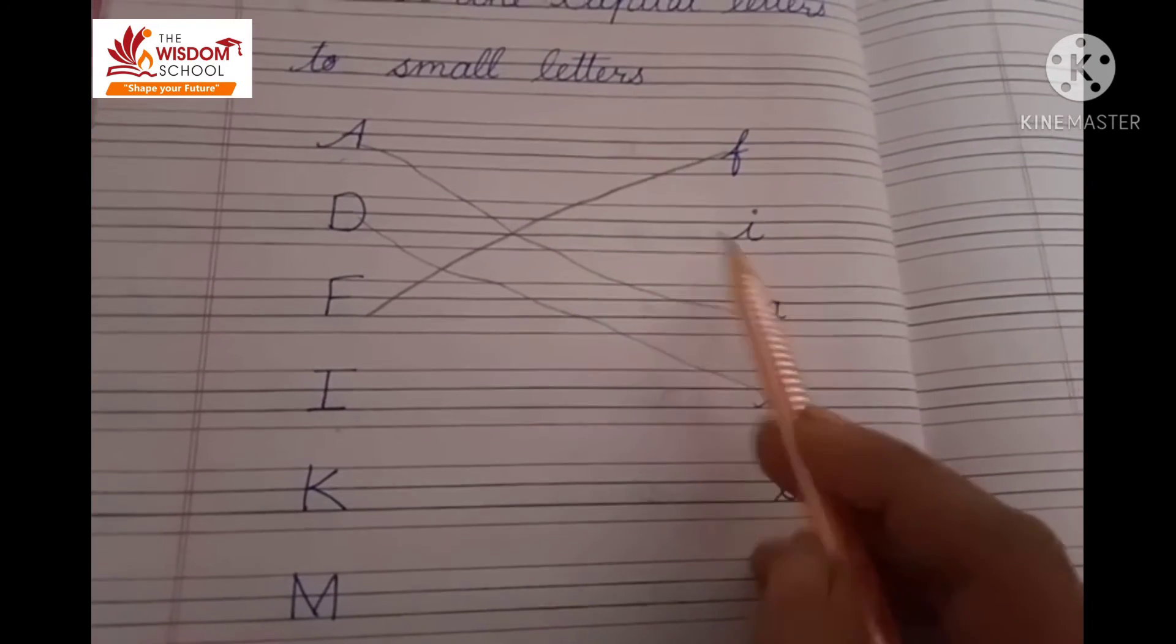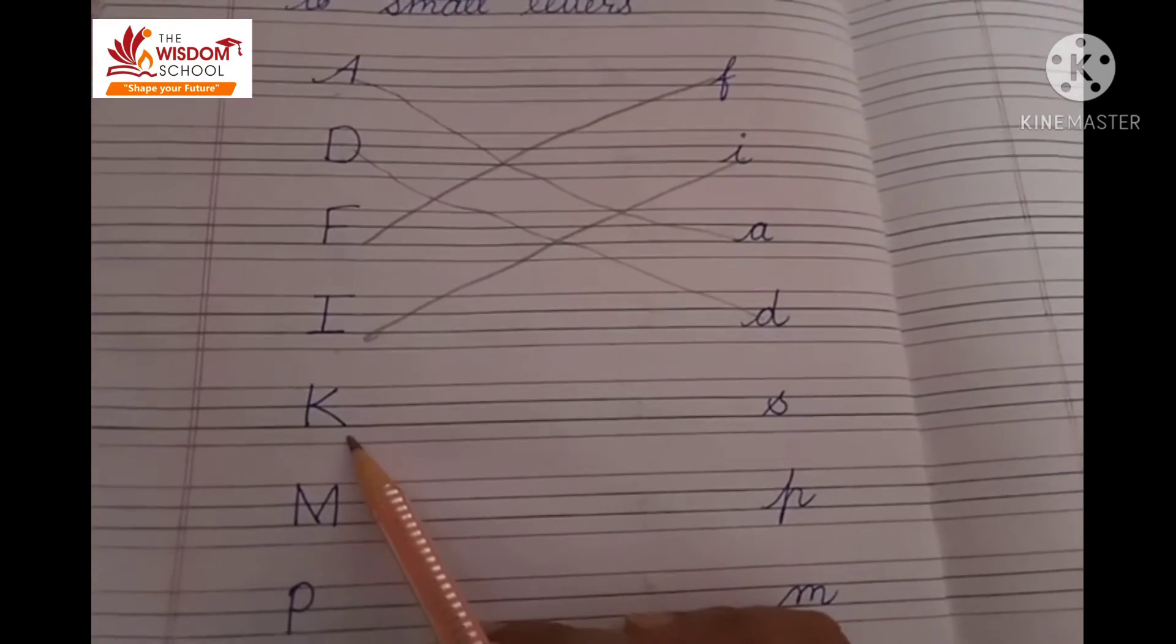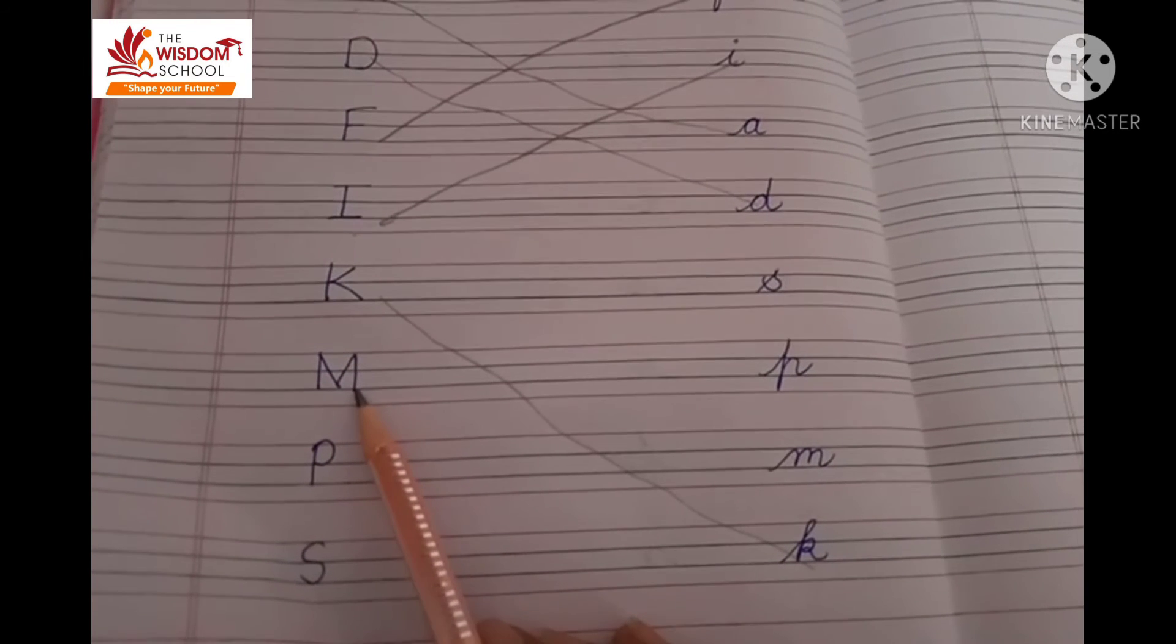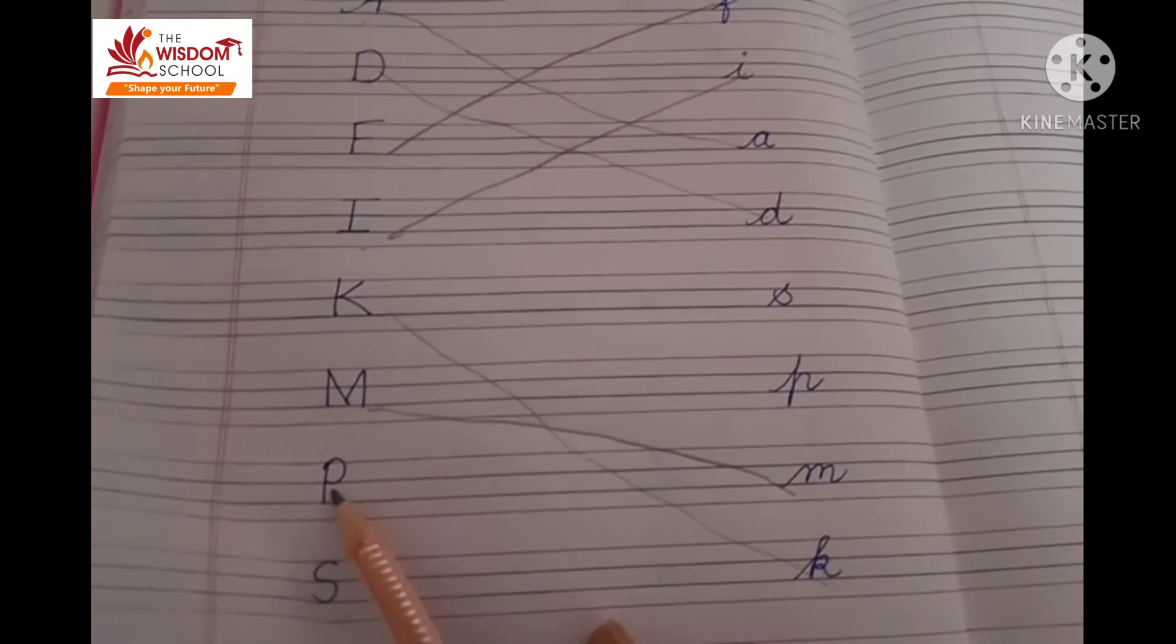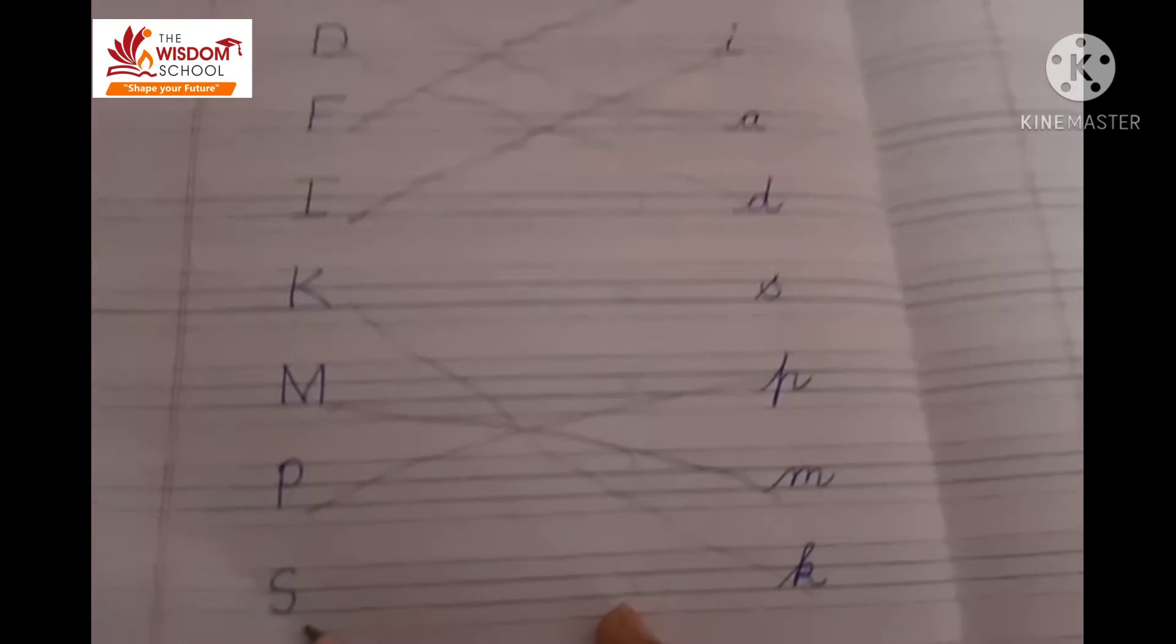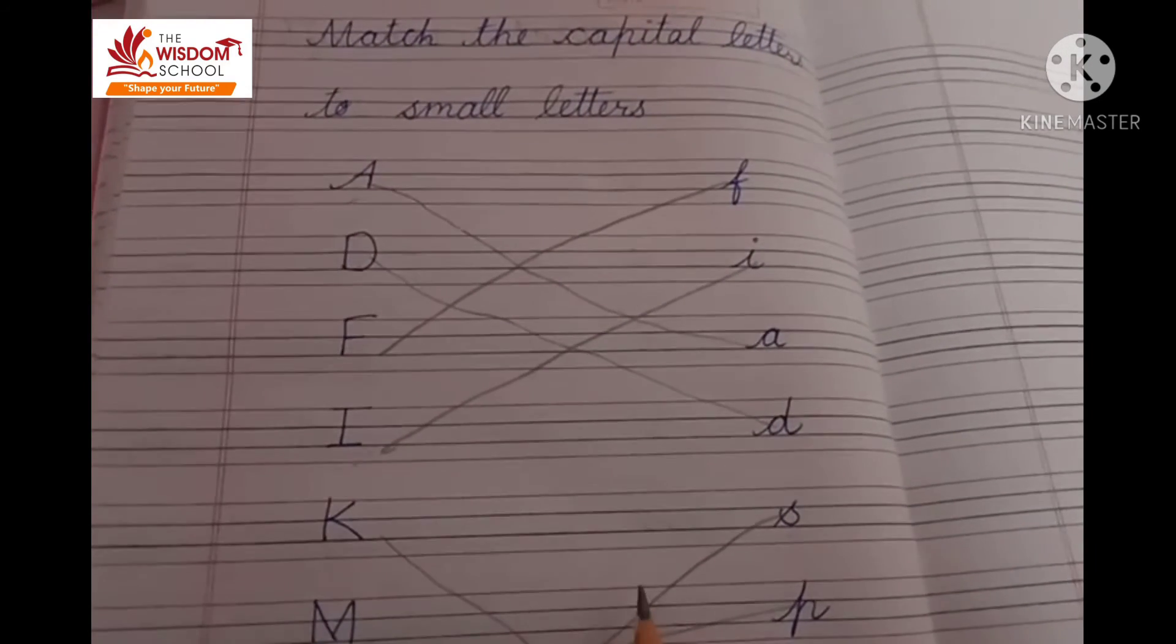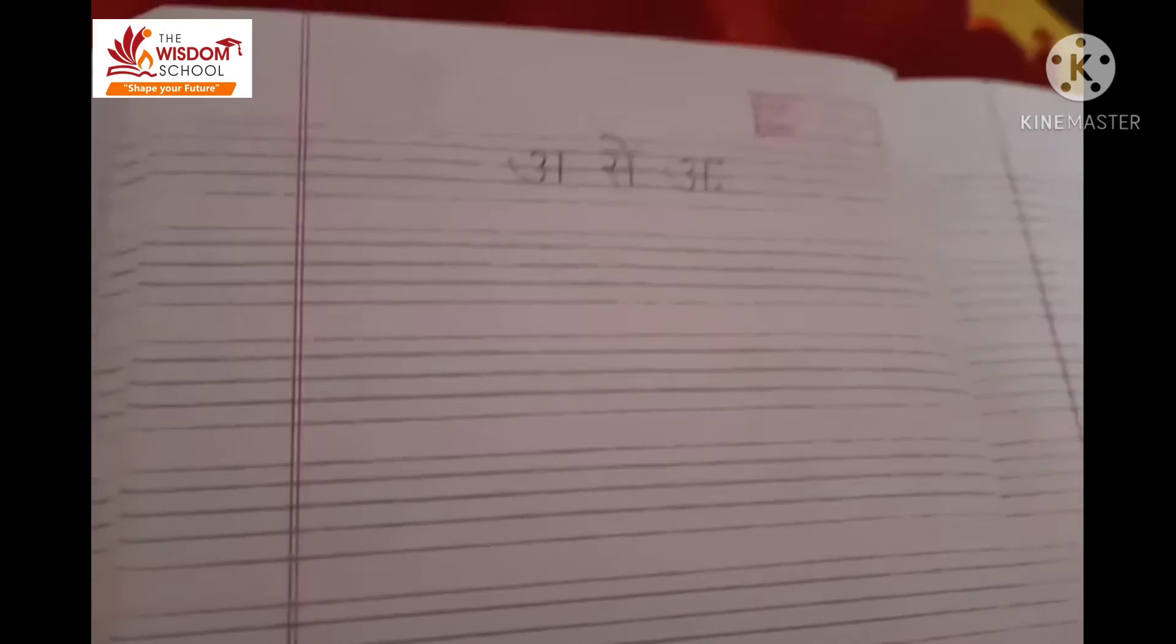Now we will match the next capital letter K. Now see small letter K is right and then we will match the next capital letter M. Now we will match the next capital letter P and then small letter P. Next capital letter S and then small letter S. Okay, this is how you will match the capital letters with small letters.